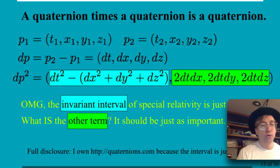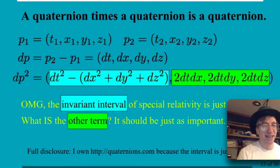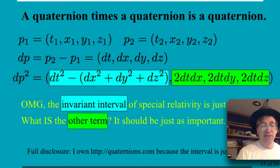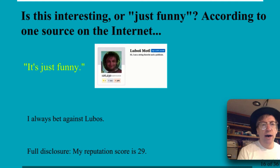I own quaternions.com. The reason I bought it was because of that light blue box — I saw it and said that's the key to special relativity, and that's not an accident. I bought it around 1997.